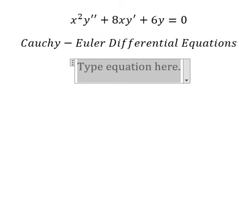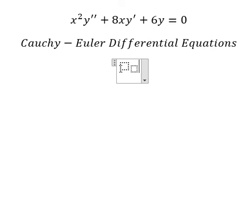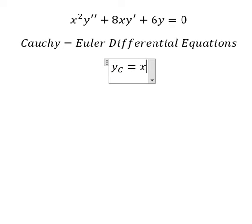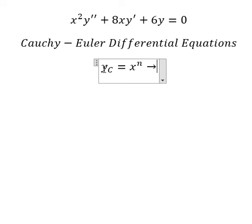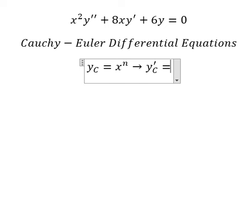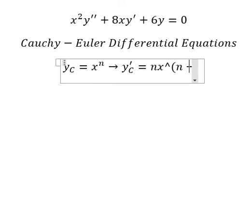We put yc — that's the complementary solution — equal to x to the power of n. If we take the first derivative of this, we have n times x to the power of n minus 1. Next, we need to do the second derivative.